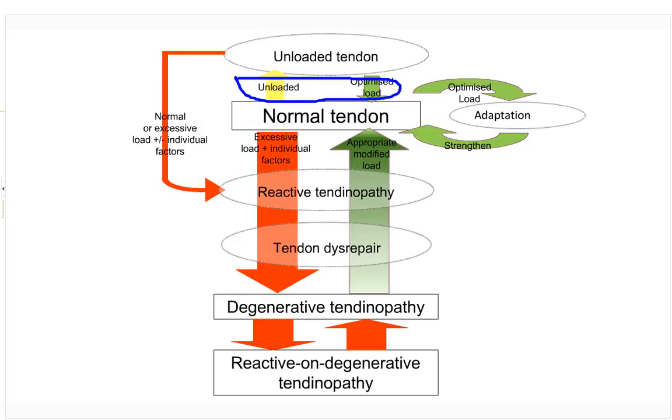If you unload your tendon — for example, if you break your ankle and get put in a cast — you've unloaded your Achilles tendon. When going through rehabilitation with slow progressive exercises, you're optimising the load. The Achilles tendon comes along for the ride. This is an example of everyday life where we go from normal tendon, unload it, then reload it, providing a lovely graded progression of load — and that's what tendons like.